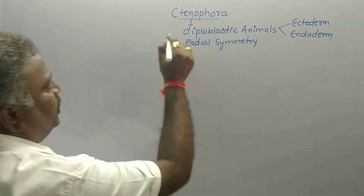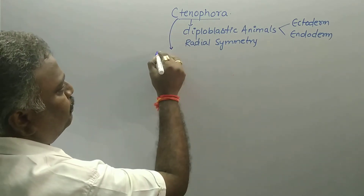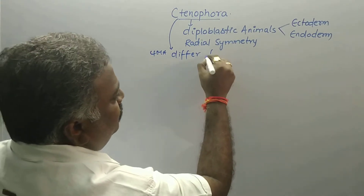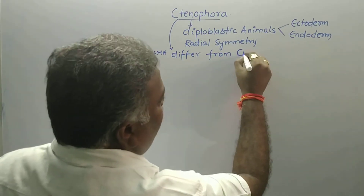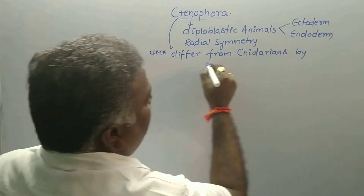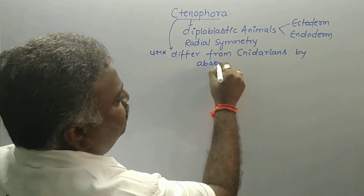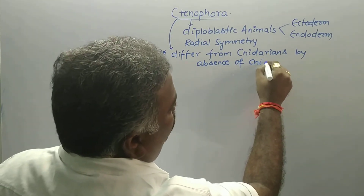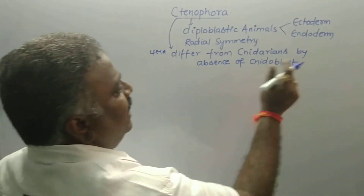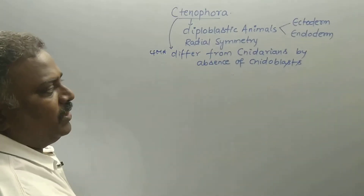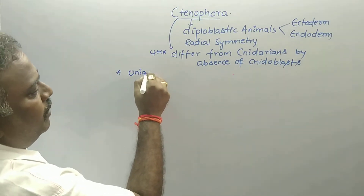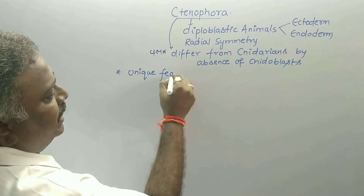Ctenophores differ from cnidarians by the absence of nidoblast cells. Cnidarians have nidoblast cells, whereas Ctenophores do not. The unique feature — or well-marked property — of Ctenophora is bioluminescence.